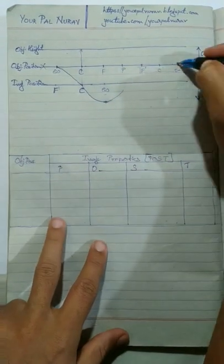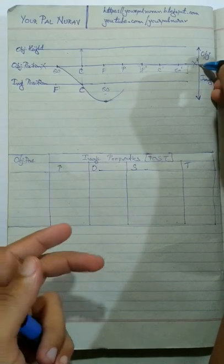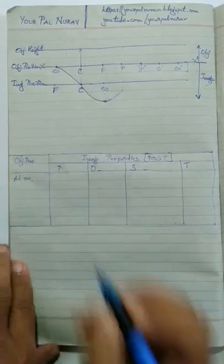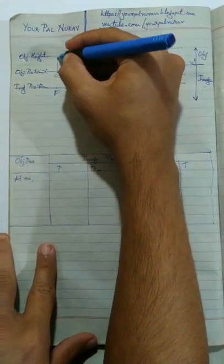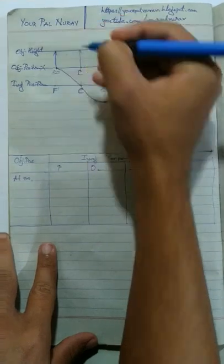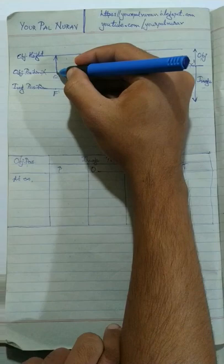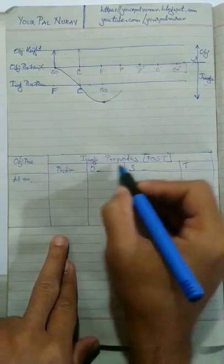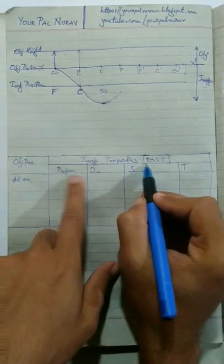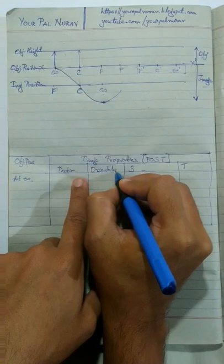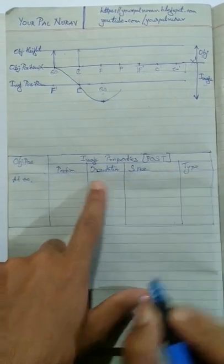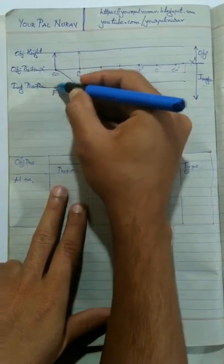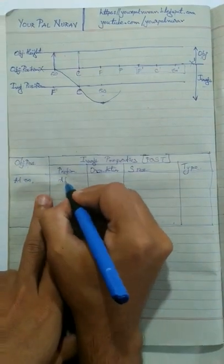Everything above the horizontal line is related to the object; everything below is related to the image. Case 1: if the object is at infinity and we consider the object height as two lines, then below the line there is no height, so the image size is zero. Using POST — position of the image is at F, because when the object is at infinity the image is formed at F.